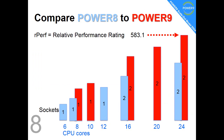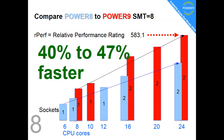Fact number eight: what does all this technology give you? Compared to the previous generation — which are very good and fast computers — we're having a jump up in performance. The relative performance number is 583. In the year 2000 we had an RS6000 computer that was the same size as the S924, and that was rated as one. In those eighteen years, computers are now 583 times faster.